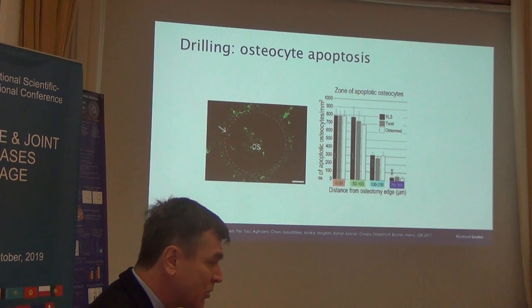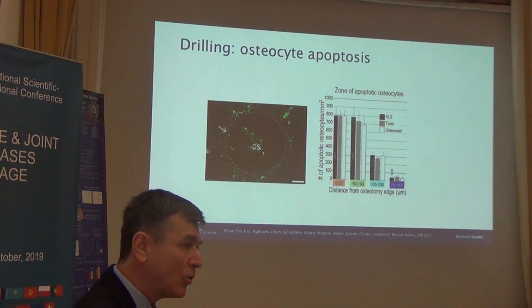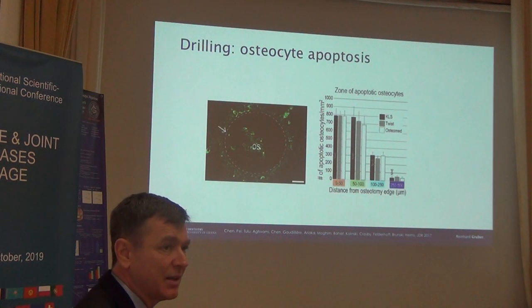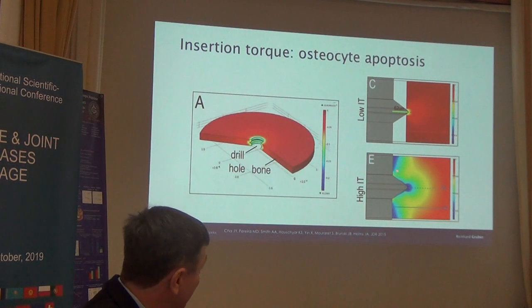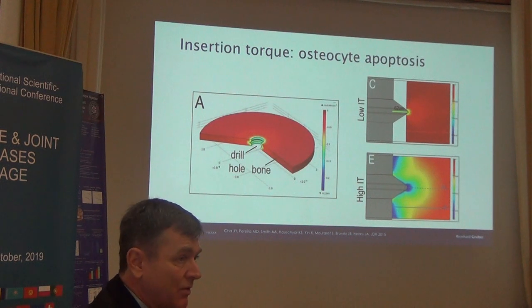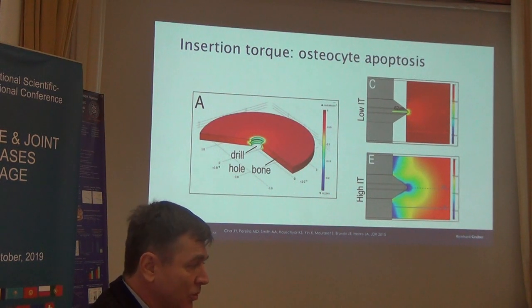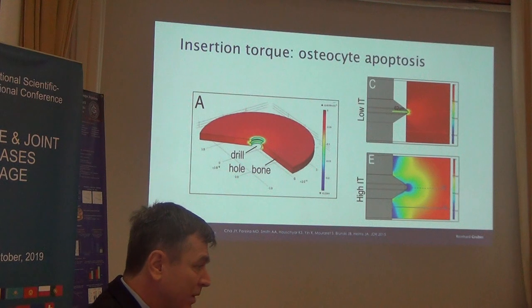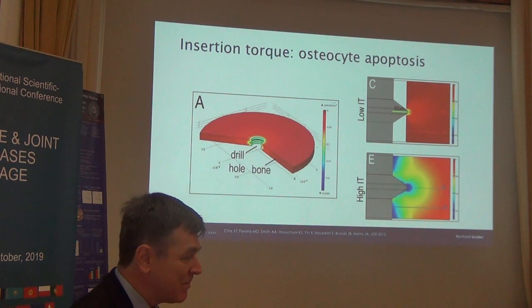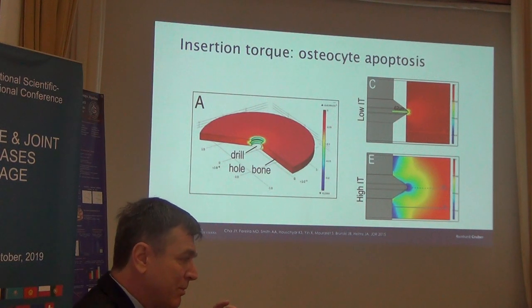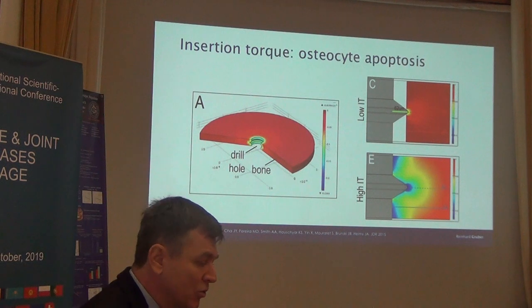Another issue in implant dentistry, apart from drilling, is how forcefully you insert the implant — the insertion torque. It is quite logical that a very high insertion torque injures osteocytes. Osteocytes die, and dying osteocytes cause bone resorption. So it is very important when placing an implant to be very careful with the bone and not cause more injury than necessary. This is today's knowledge and also the basis for the design of new dental implants.